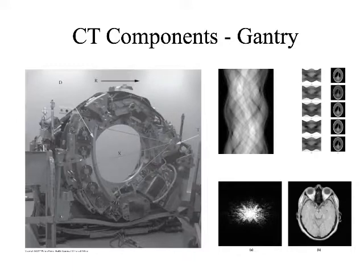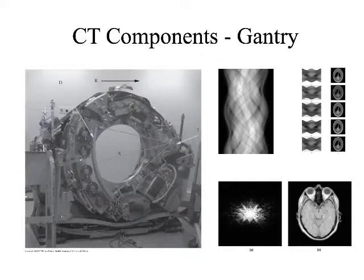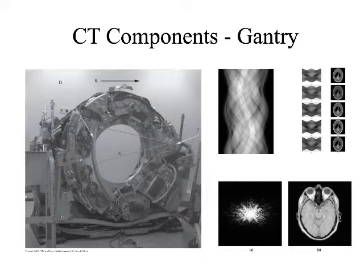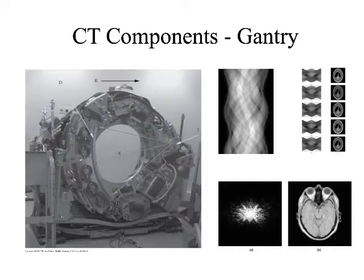The geometry of the x-ray beam is important. We primarily use cone beam geometry — the x-ray beam is shaped like a cone — which is also used for image acquisition in radiation therapy. The point at the center of the gantry, around which everything rotates, is called the isocenter. The CT scanner's isocenter is not to be confused with the linear accelerator's isocenter, though they serve a similar purpose.